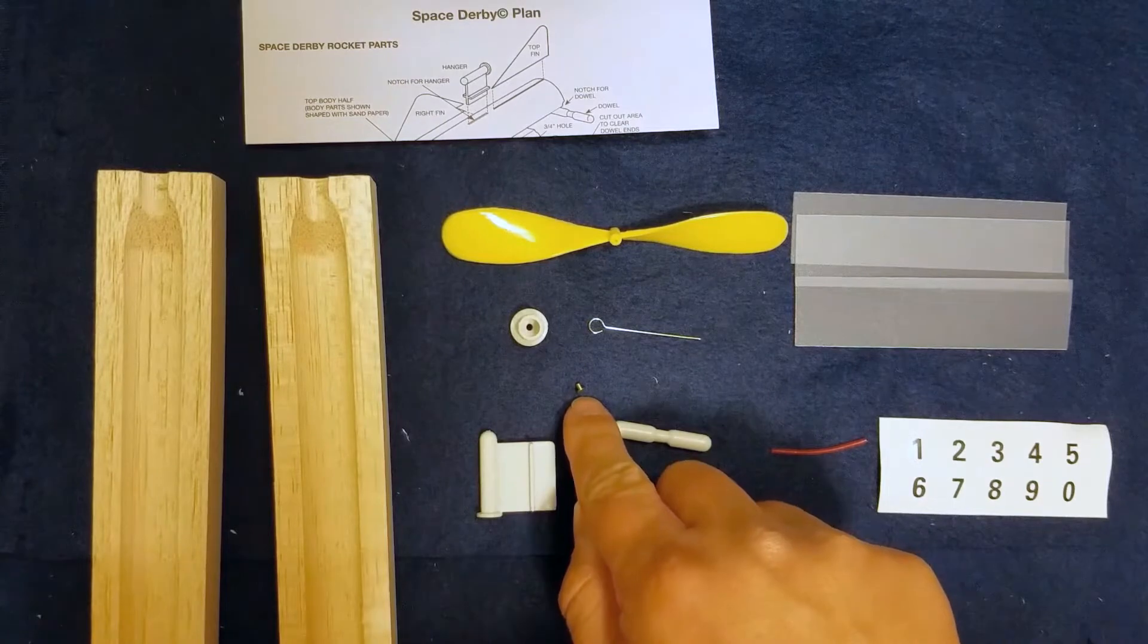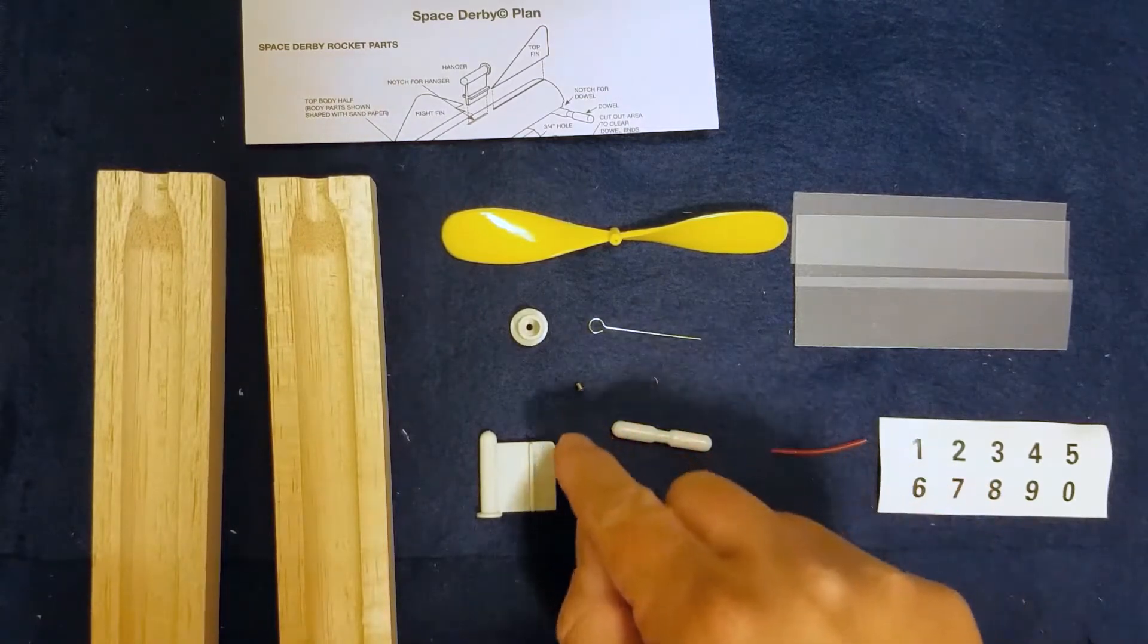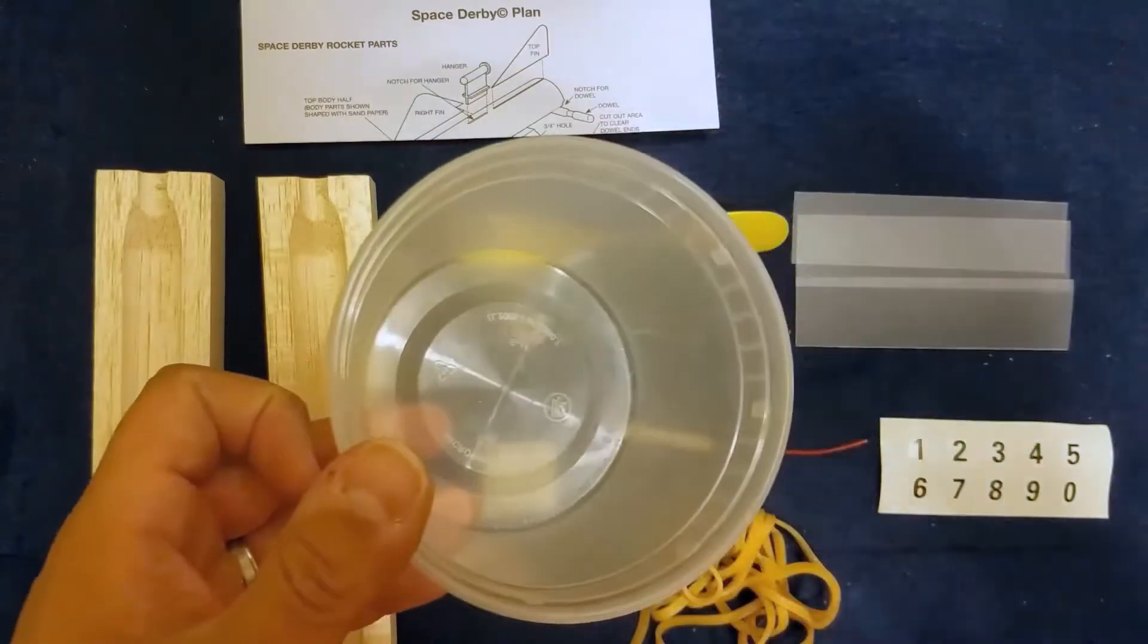We notice that there are some really small parts like this brass bushing. We want to make sure that all of these go into our bucket when we're not using them so we don't lose them.